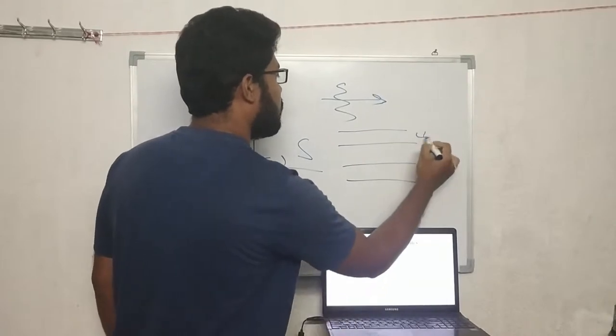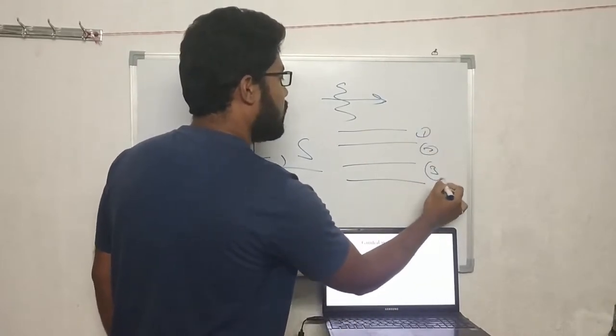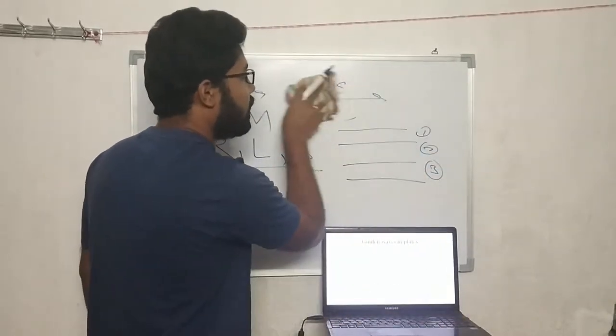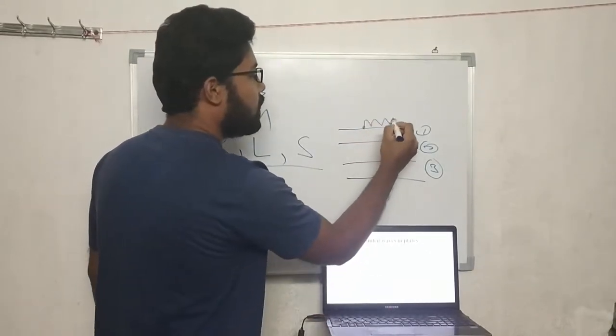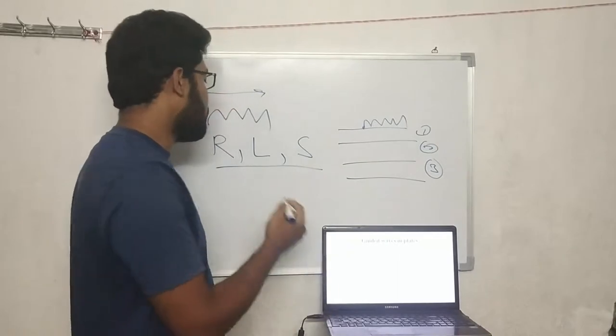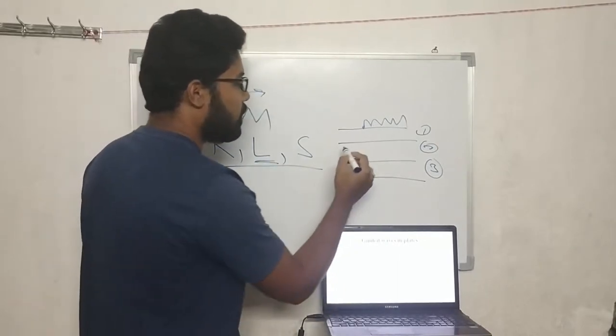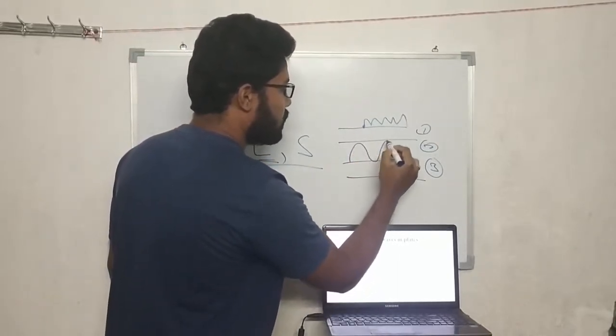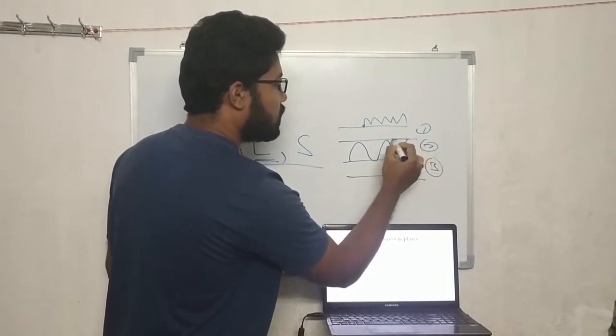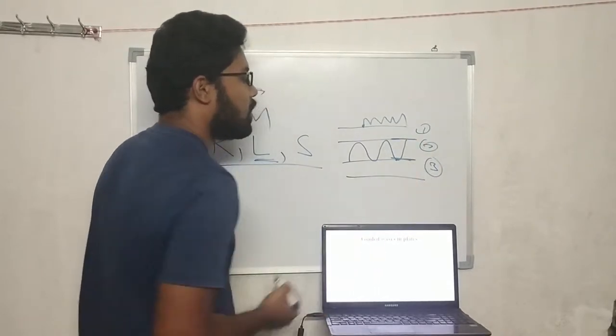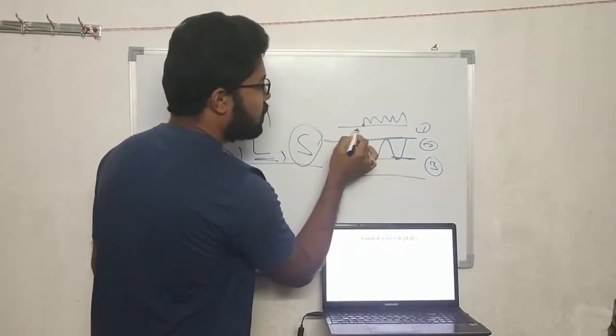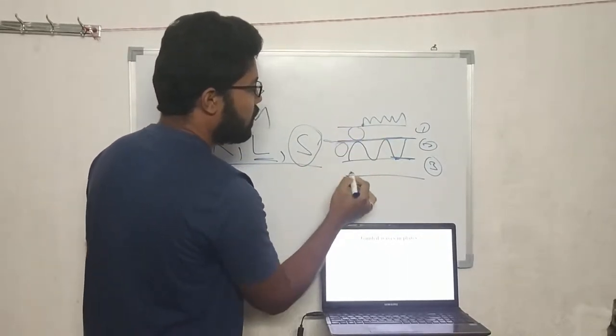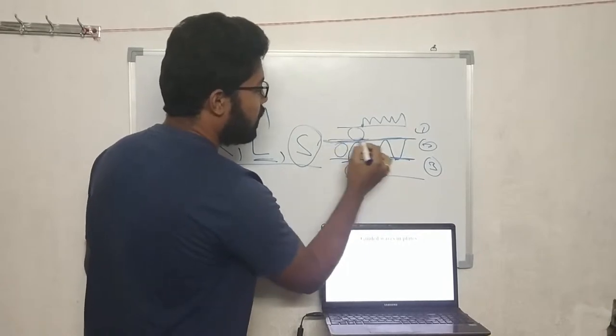If I consider this is a plate of three layers - one, two, three - then Rayleigh wave will travel at the surface of the plate. Lamb wave will travel between any two boundaries because the energy is concentrated at the boundaries. Stonely waves travel at the interface of two layers. This is one fiber, this is second fiber, this is third fiber, and these are called interfaces. Stonely wave will travel at the interfaces.